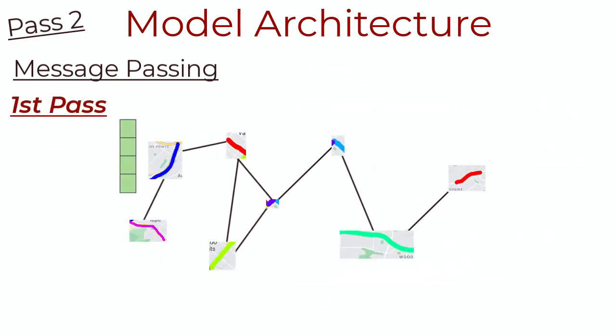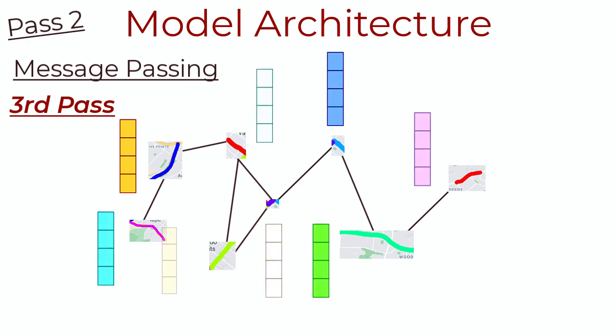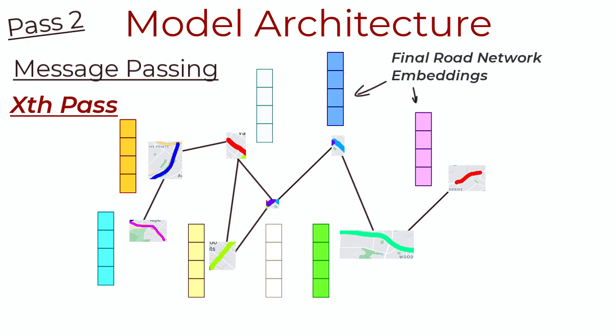On the first go of message passing, every node knows about its neighbors. On the second iteration, every node knows about its neighbors' neighbors, and it's encoded into the embedding. On the third iteration, even their neighbors are encoded into every node's embedding, and so on. In the context of road networks, message passing allows each road vector to contain information about its adjacent roads, which intuitively makes sense. After some x passes of message passing, we have the road network embeddings then.